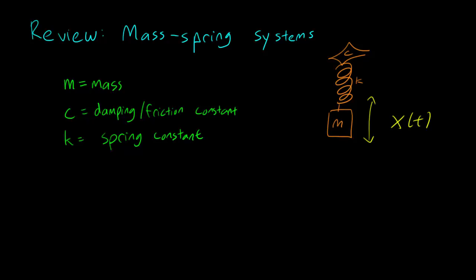And the parameters that we have to work with are m, the mass of the weight, c, the damping or the friction that the weight experiences, and k, the spring constant. So typically you will just be given these three values: mass, damping constant, and spring constant.